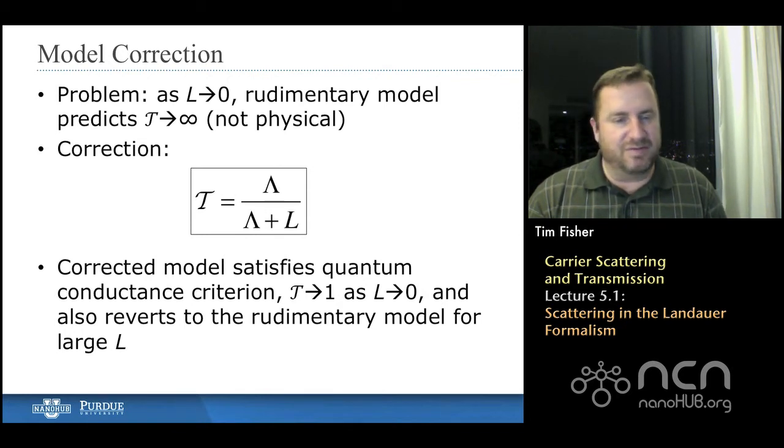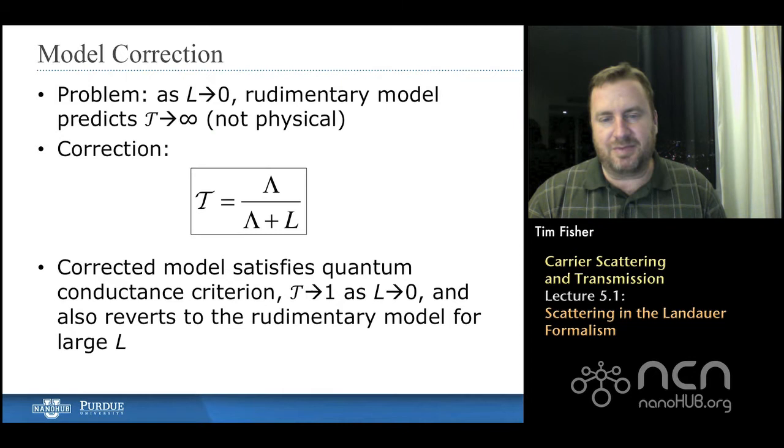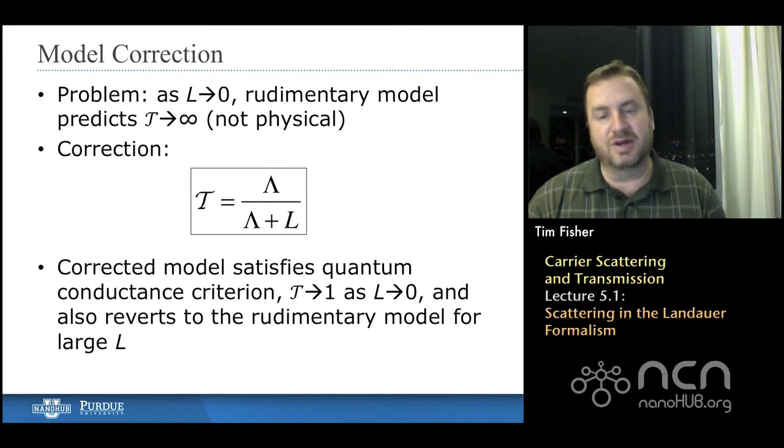And we'll just add a term in the denominator so that the denominator becomes the mean-free path plus the device length. You'll see that when we do that very simple thing, we find that as the device length goes to zero, the transmission function goes to unity, or one.